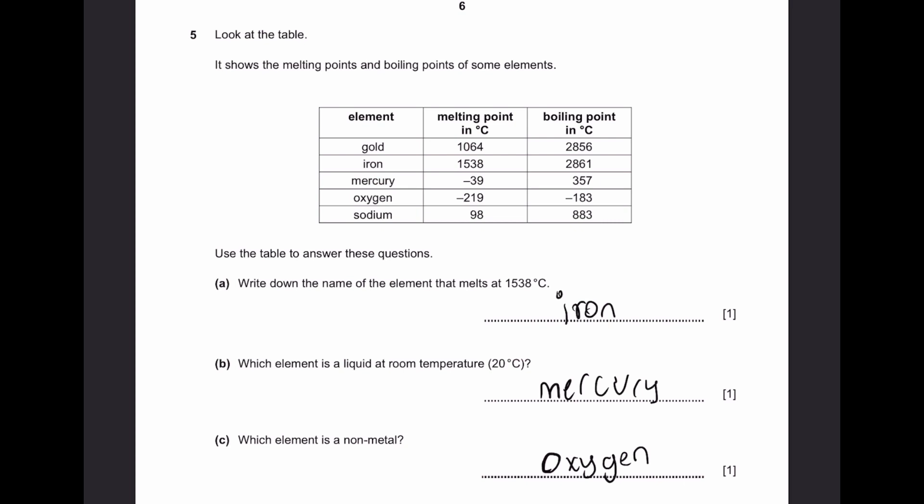Part B. Which element is a liquid at room temperature 20 degrees Celsius? Its melting point should be below 20 degrees Celsius, but the boiling point should be above 20 degrees. Mercury is exactly that with melting point negative 39 and boiling point 357 degrees. So 20 degrees is above negative 39 and below 357, making it a liquid.